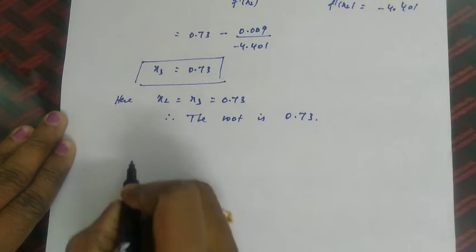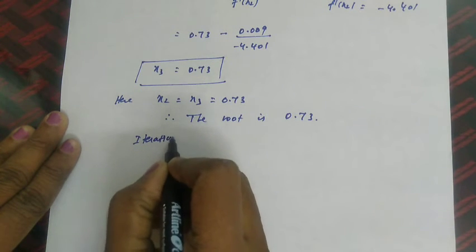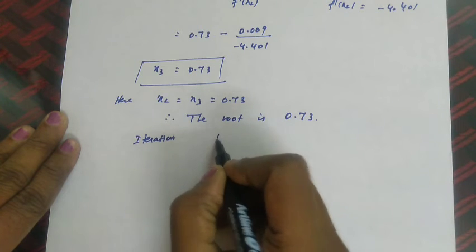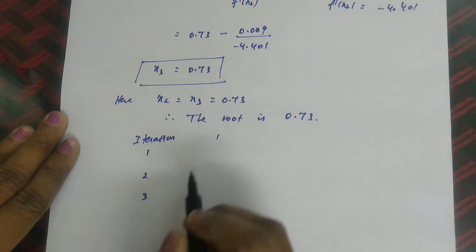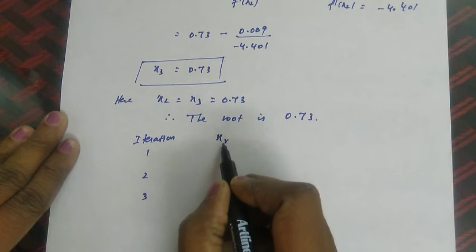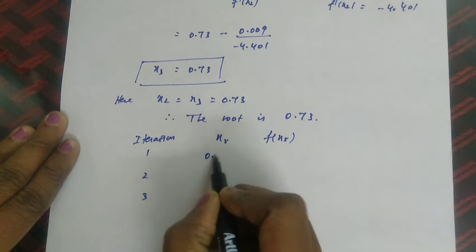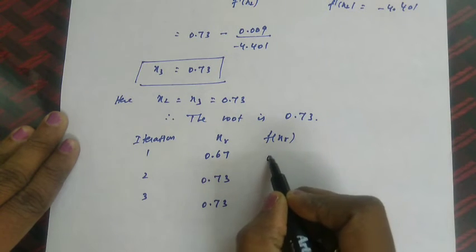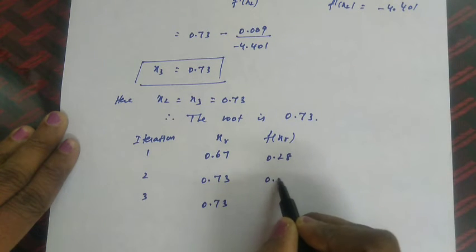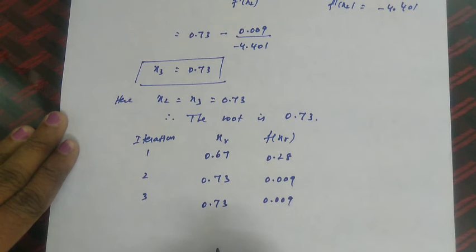The solution can also be presented in tabular form. The table has columns for iteration number (x_r: x₀, x₁, x₂) and corresponding f(x_r) values. The x_r values are 0.67, 0.73, 0.73 and the f(x_r) values are 0.28, 0.09, 0.009. Therefore the root is 0.73.